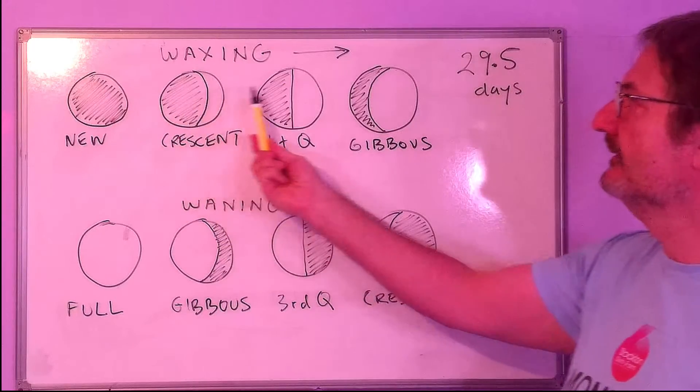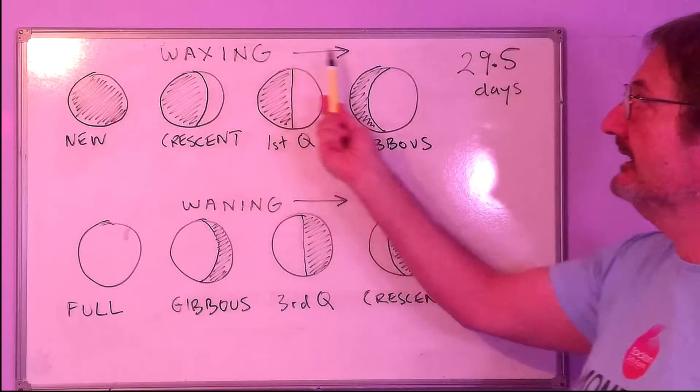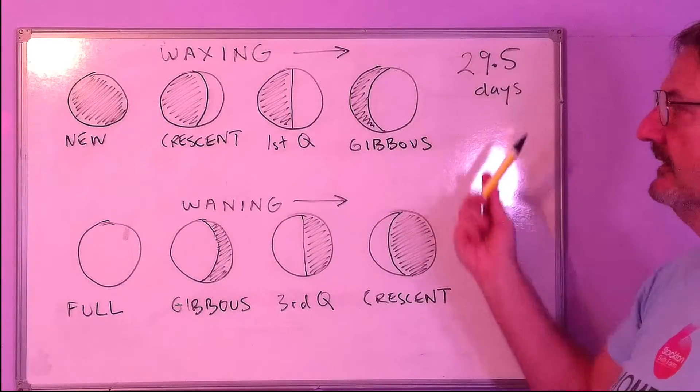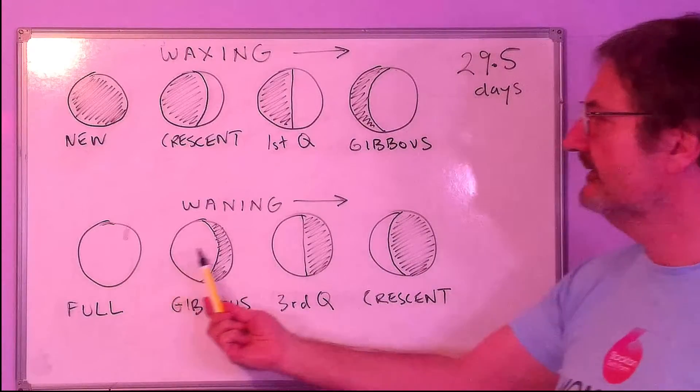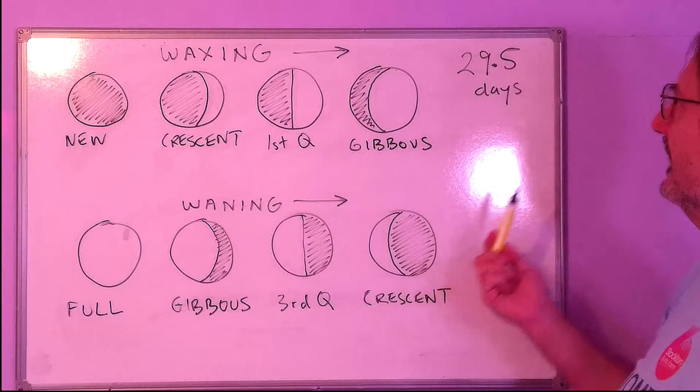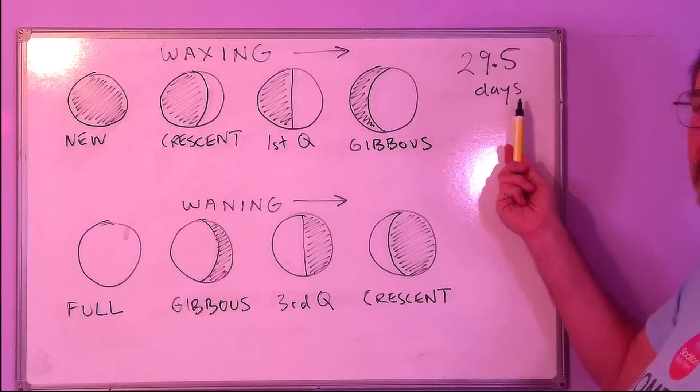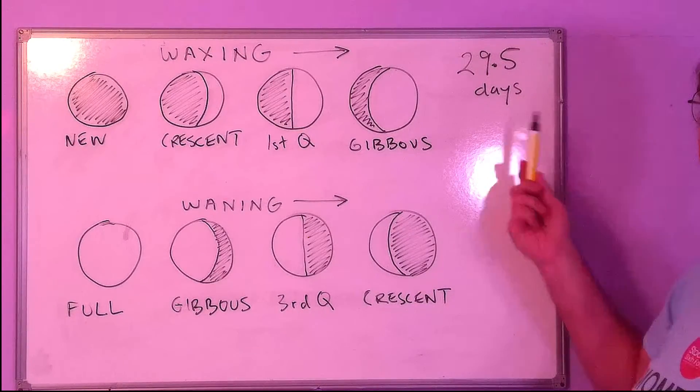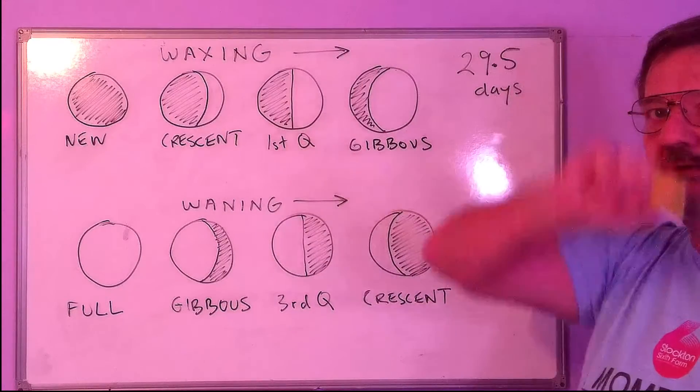Then we're back to a new moon and the phase cycle starts again. So we see more and more of the moon as it's waxing, about two weeks, and then we see less and less of the moon as it's waning, which is another two weeks, and the whole phase cycle takes 29.5 days as the moon goes round the earth.